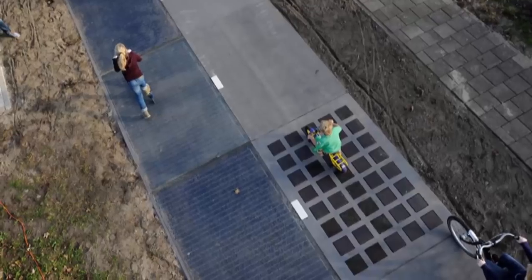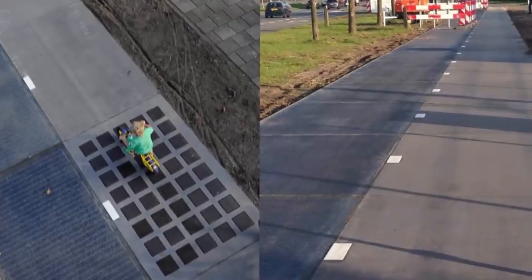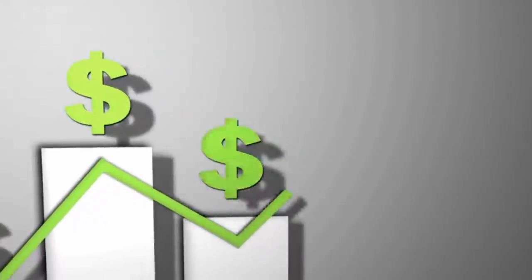In the Netherlands, where they started small with a solar bicycle lane, the roads surpassed their energy estimates in the last year.